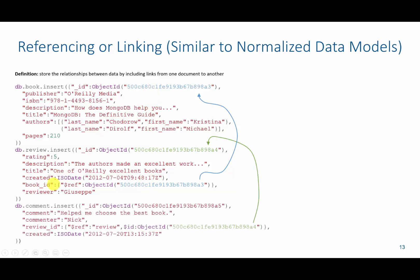Inside of that, we're going to have comments about each review, and each comment has its own object ID. The object ID of the review ID inside the comment is going to reference the object ID in the review. So this is similar to how we discussed it in SQL, but this is less common.